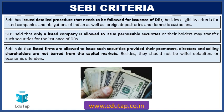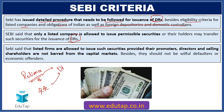SEBI has come out with a detailed procedure that has to be followed for the issuance of depository receipts. This procedure covers eligibility criteria for listed companies, and obligations of Indian as well as foreign depositories and domestic custodians. SEBI has stated that only a listed company is allowed to issue permissible securities, or their holders may transfer such securities for the issuance of depository receipts. For example, Reliance, being a company listed in India, can issue depository receipts, or its shareholders can transfer shares for conversion into depository receipts.